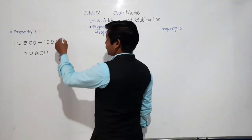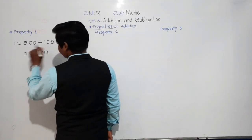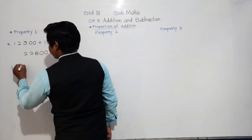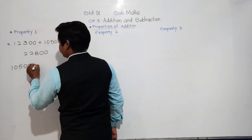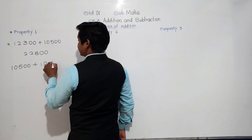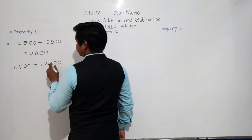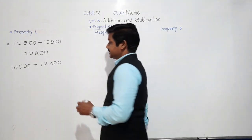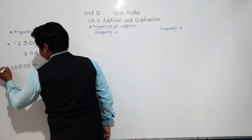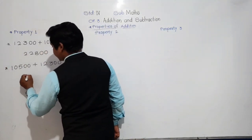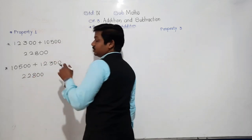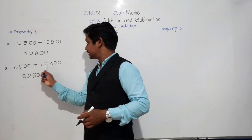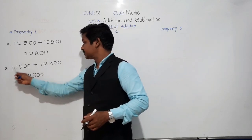Suppose we change the order — we write 10,500 first, plus 12,300. What sum will we get? The same: 22,800. You can check: 0 plus 0 is 0, 0 plus 0 is 0, 5 plus 3 is 8, 0 plus 2 is 2, and 1 plus 1 is 2.